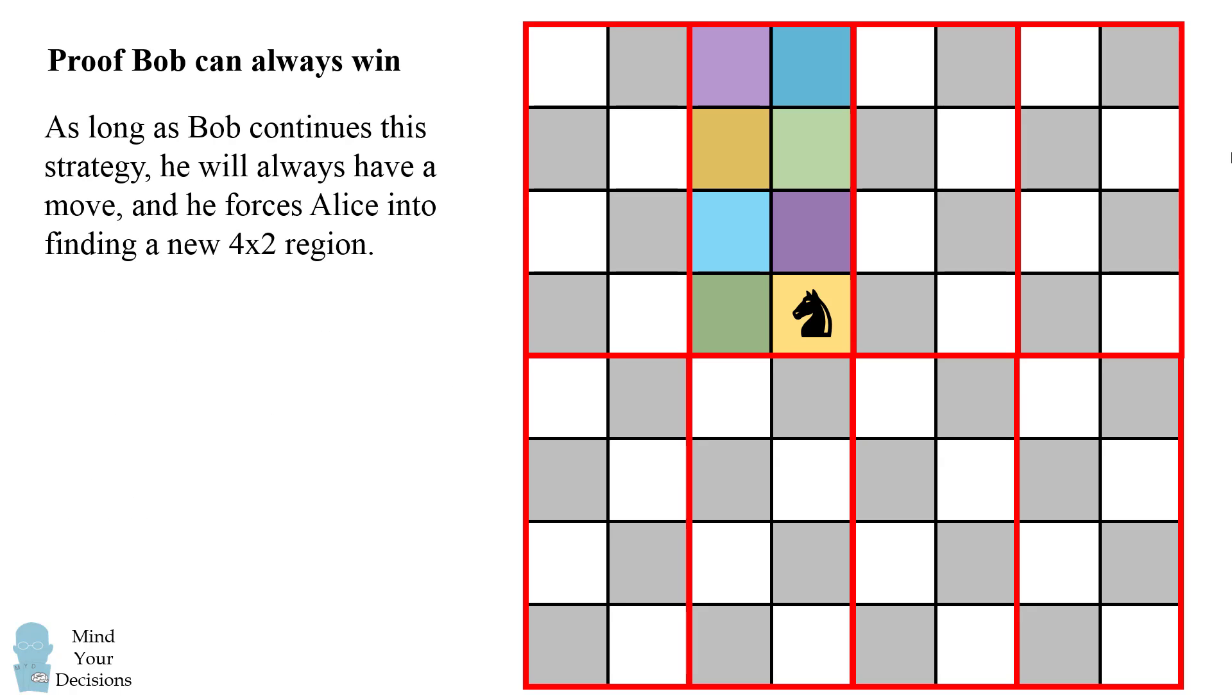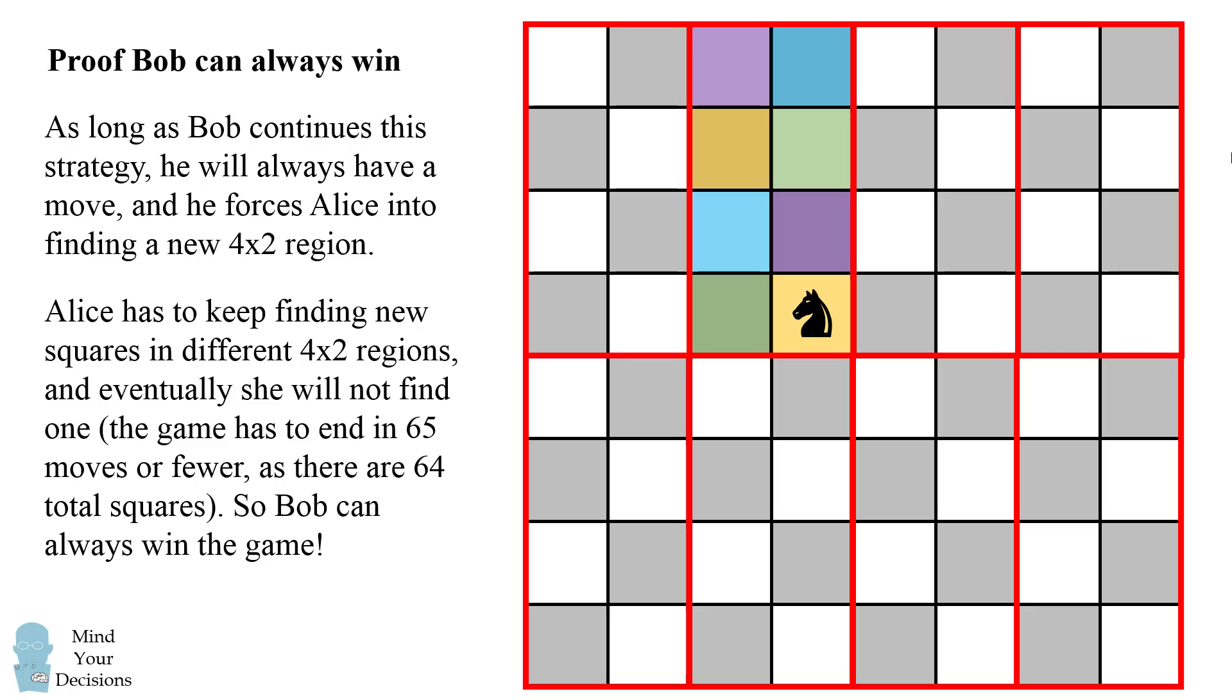As long as Bob continues this strategy he will always have a move and he forces Alice into finding a new 4x2 region on every single move. Alice has to keep finding new squares in different 4x2 regions and eventually she will not find one. The game has to end in 65 moves or fewer as there are a total of 64 squares.